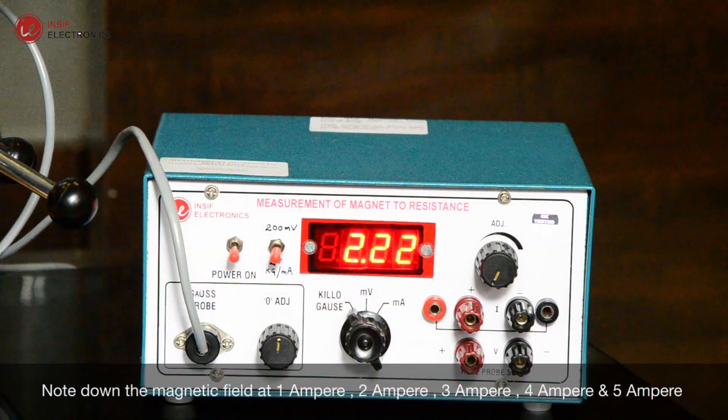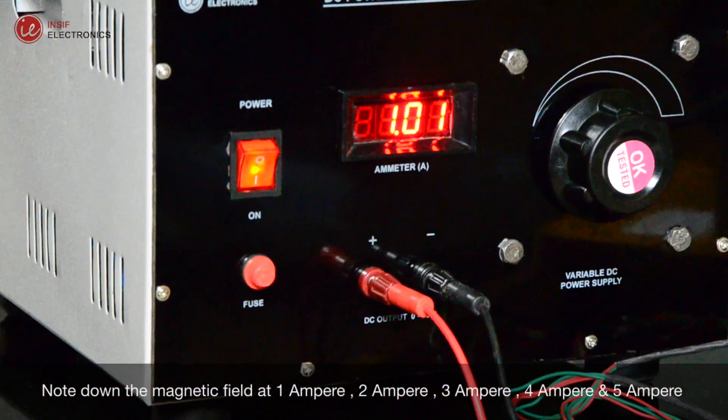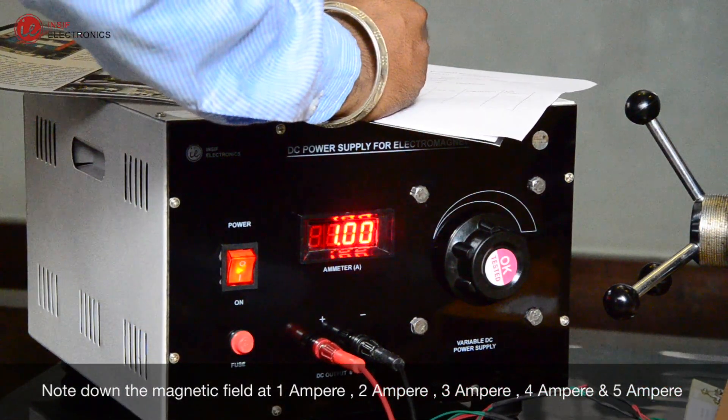Note down the magnetic field at 1 ampere, 2 ampere, 3 ampere, 4 ampere, and 5 ampere.